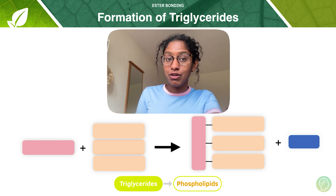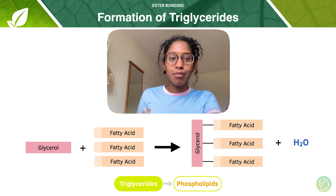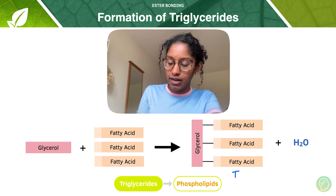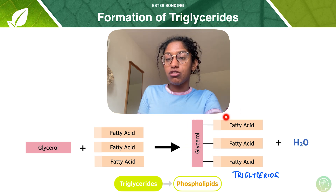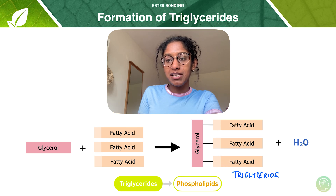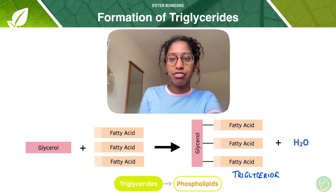So I'm going to reveal. This is what is happening. Our triglyceride is our glycerol bonded to three fatty acids — that's our basic structure. Which means that the monomers of a triglyceride must be one glycerol and three fatty acids.